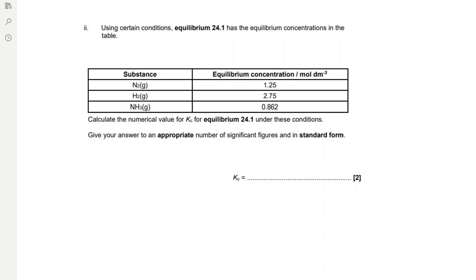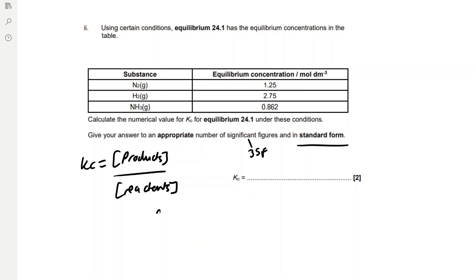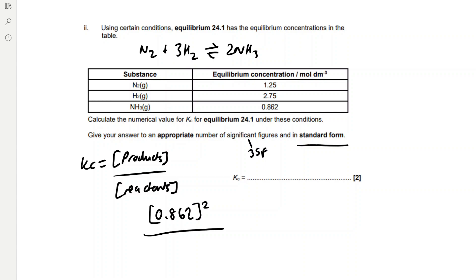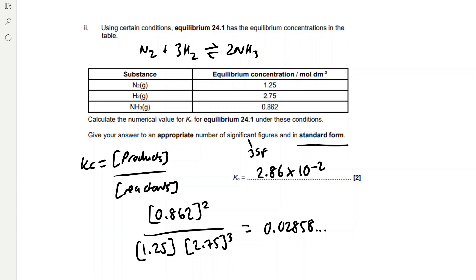Using certain conditions, equilibrium 24.1 has given equilibrium concentrations. We need to calculate Kc to 3 significant figures in standard form, since all given concentrations are to 3 significant figures. Kc = [NH3]² / ([N2][H2]³) = (0.862)² / (1.25 × (2.75)³). Calculating this gives 0.02858, which to 3 significant figures in standard form is 2.86 × 10⁻².